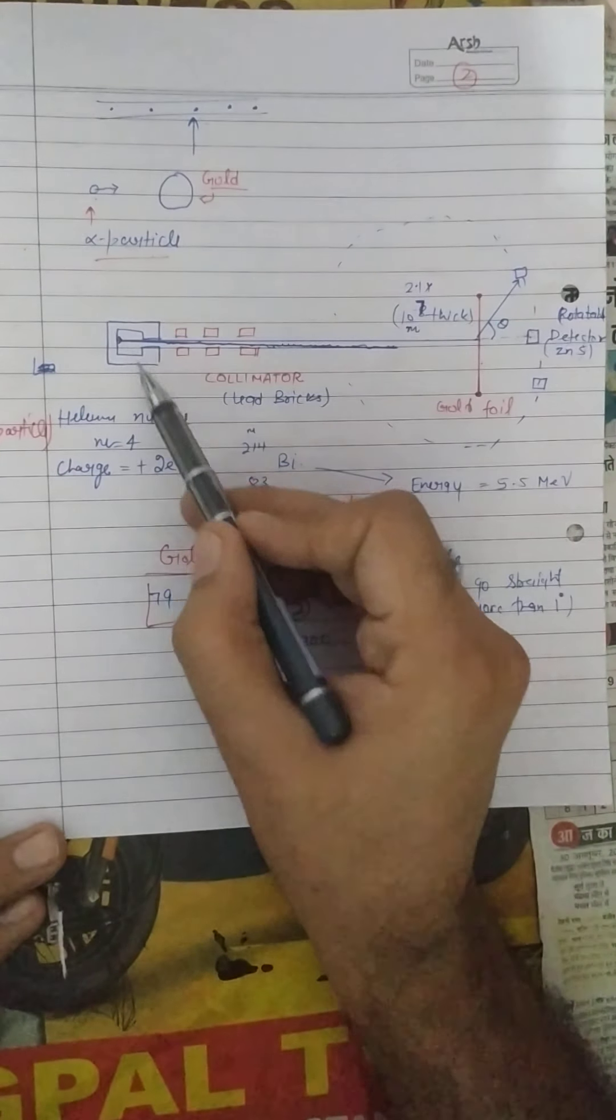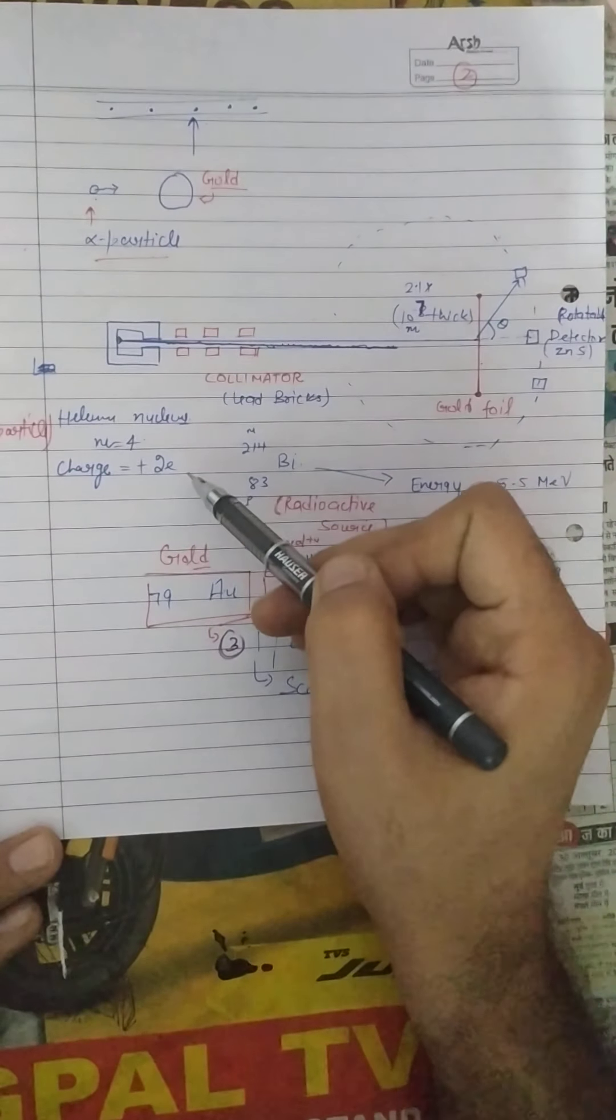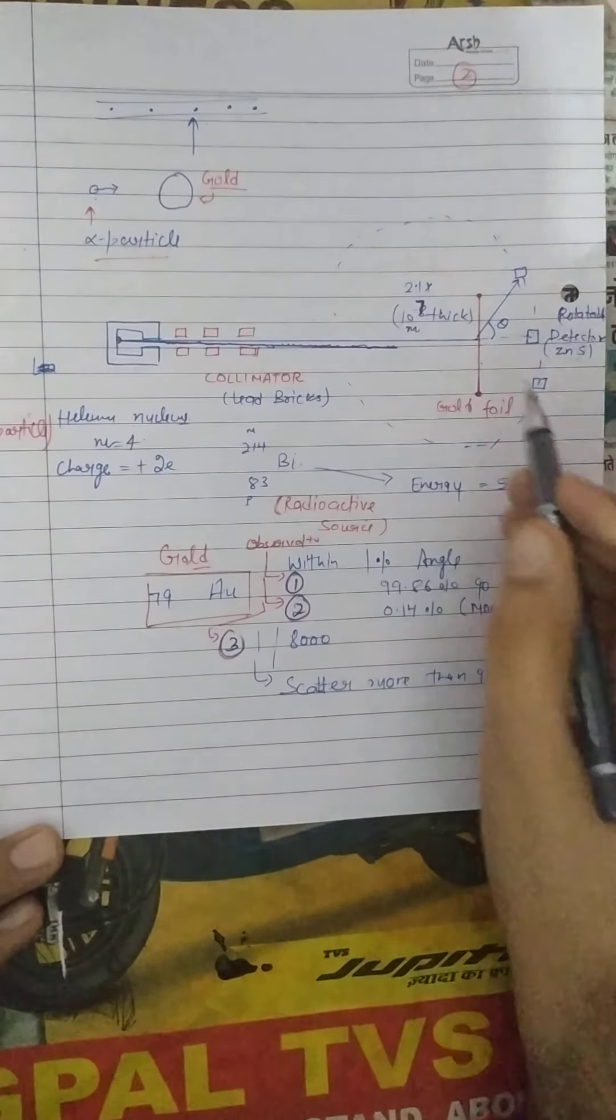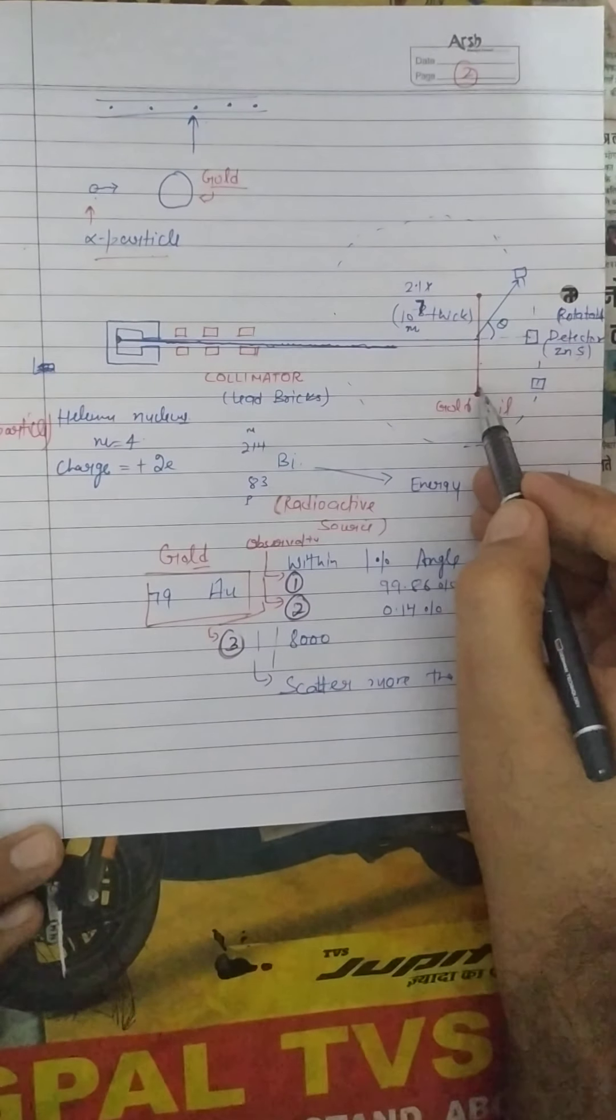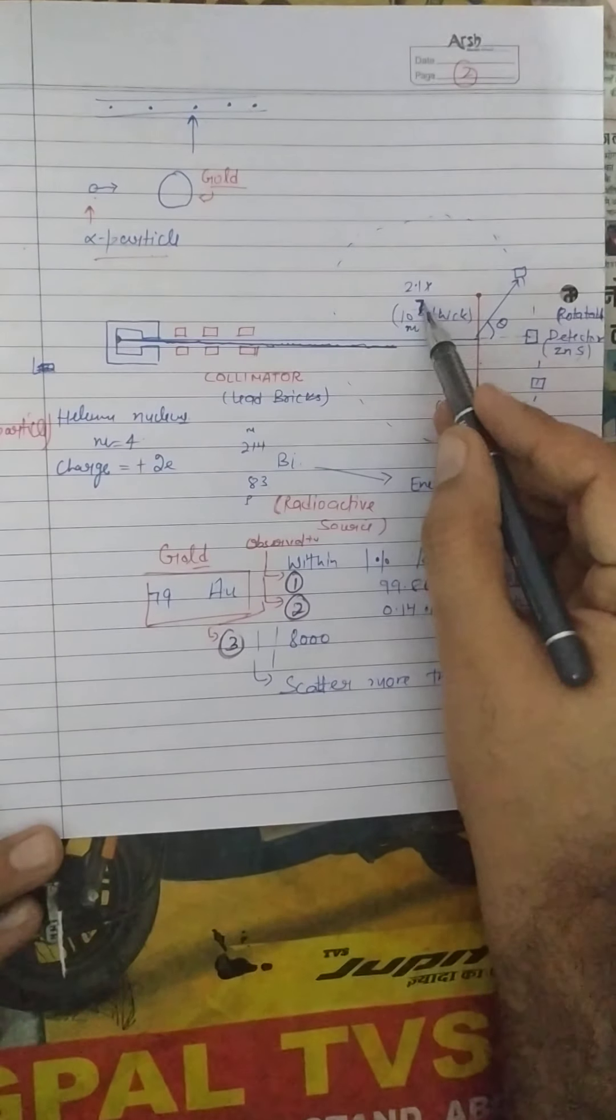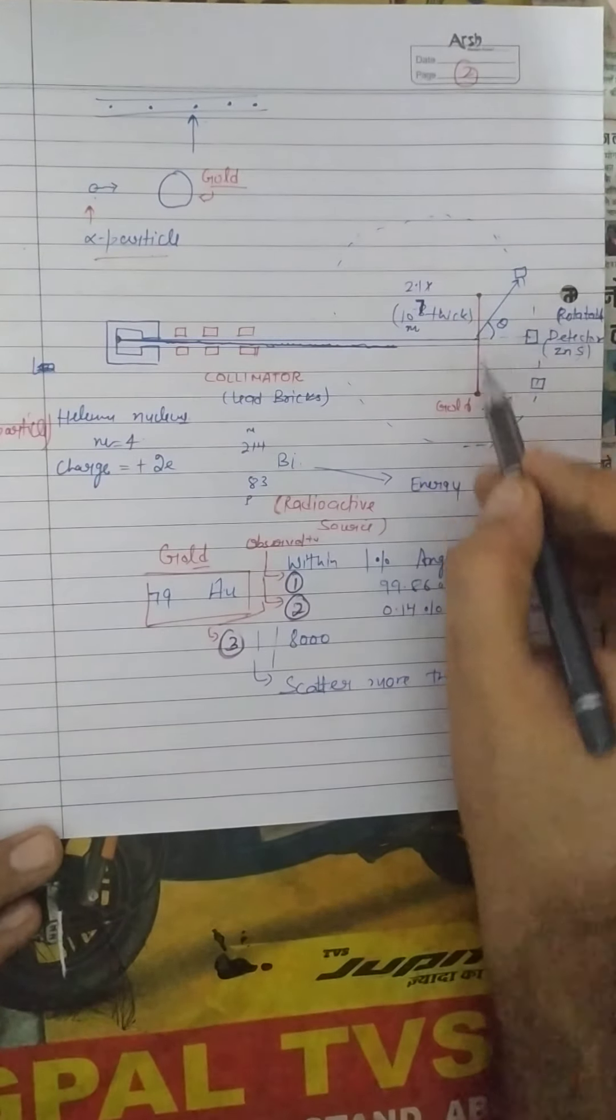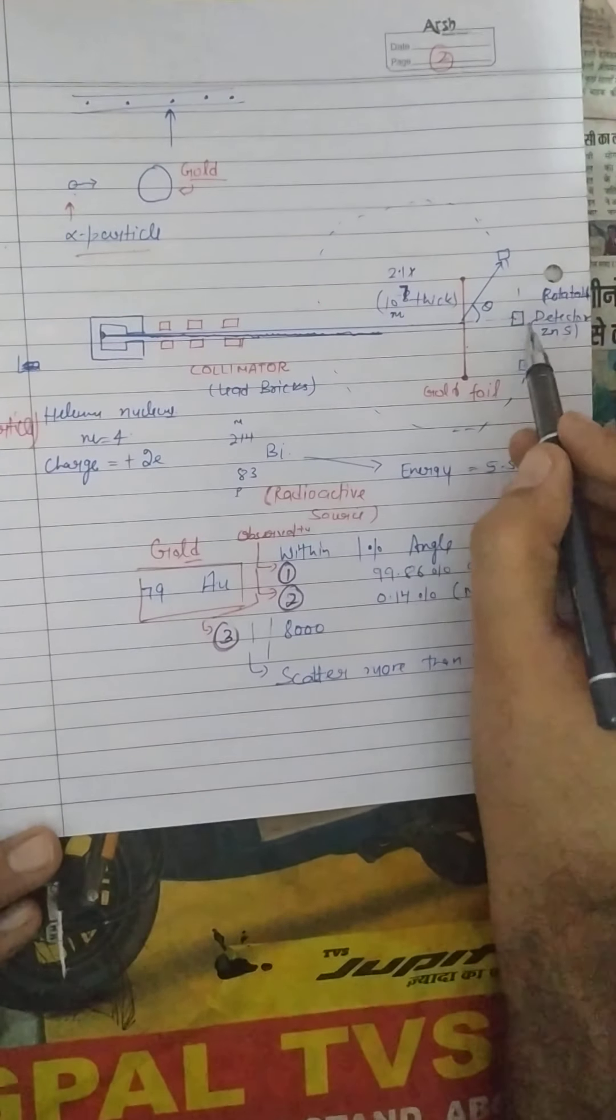So these alpha particles are helium nucleus, that is of mass 4 and the charge is positive 2. This is a very thin film that is having a thickness of 2.1 into 10 power minus 7 meter, and that is the particular thickness of this particular gold film.